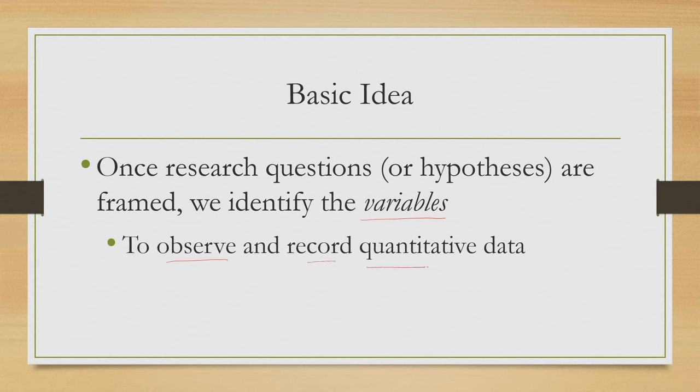What we discussed is that a research question is one way of looking at things. Generally, based on the research questions we frame, we come up with a hypothesis and then try to refute or justify it. For each question there can be two hypotheses: one is the null hypothesis, which we wish to refute or nullify, and the other is the alternative hypothesis, which we aim to establish. Once the research question or corresponding hypothesis is framed, we need to identify the variables — in order to observe and record quantitative data so that we can perform data analysis techniques and come to a reliable conclusion about the outcome of the study.